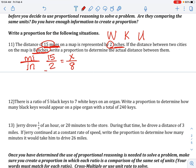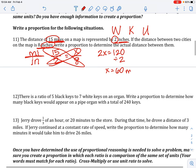Cross multiply. 2 times x is 2x. 15 times 8 is 120. To solve this, we take 120, divide by 2, to get x equals 60, which is 60 miles.